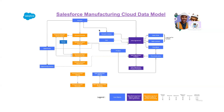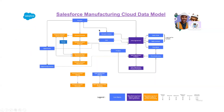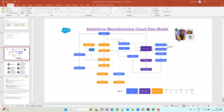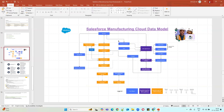Hello everyone, welcome to Salesforce Start. In the last video we discussed about Salesforce Manufacturing Cloud permission sets — once these permission sets are assigned to users, they can work on the Manufacturing Cloud objects. Today we'll discuss an important object in Manufacturing Cloud called the Sales Agreement object, which we are going to use for sales in Manufacturing Cloud.